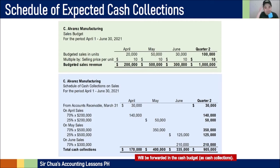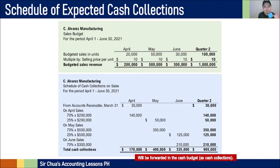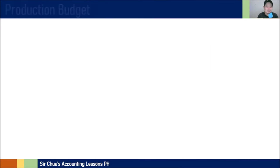In budgeting, you must follow exactly what the problem says. The problem gives you instructions, and you must follow them to answer correctly. If you don't follow the given instructions, you won't be able to solve the budgeting problem. Follow the problem carefully to prepare your master budgets properly.